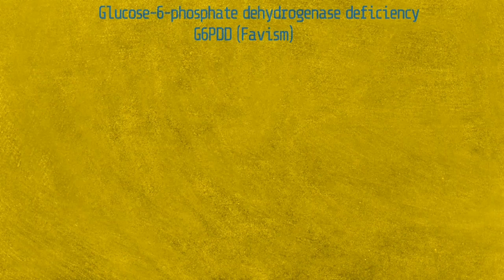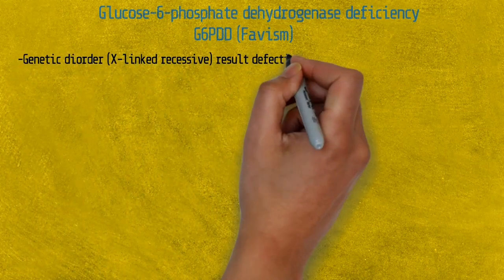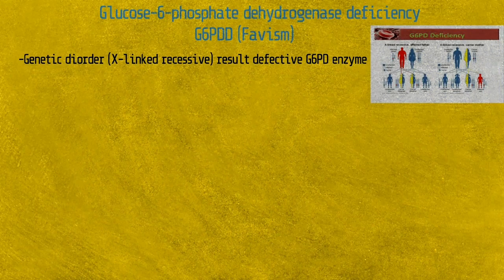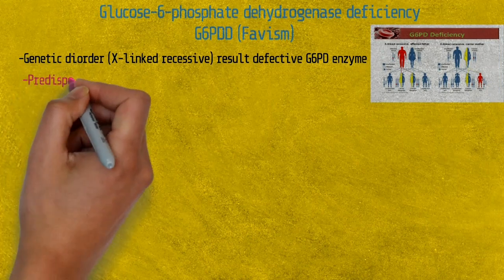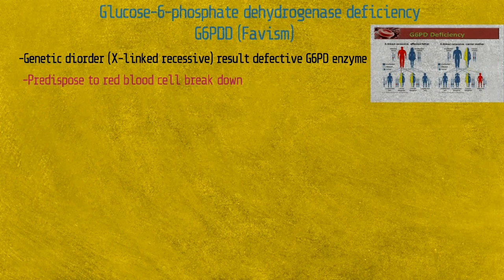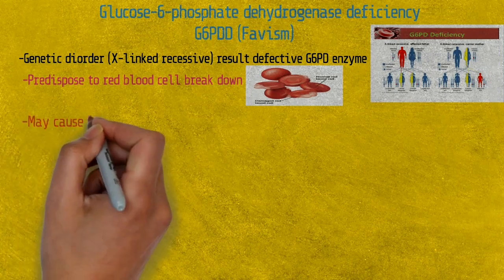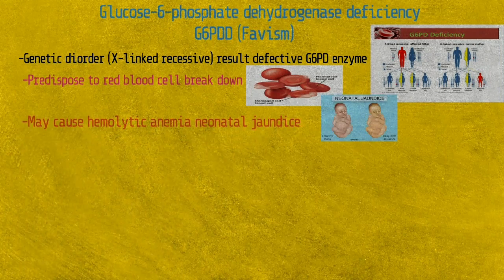So what is glucose-6-phosphate dehydrogenase deficiency? When symptomatic, we call it Favism. It is a genetic disorder — X-linked recessive — resulting in defective glucose-6-phosphate dehydrogenase enzyme, an error of metabolism that predisposes red blood cells to breakdown, which may cause hemolytic anemia, neonatal jaundice, and other complications.